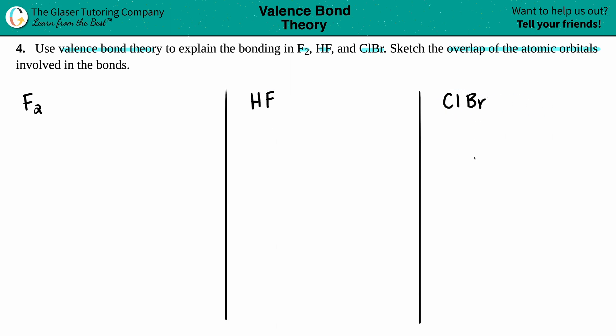To fully understand this question for valence bond theory, there are two things we need to know: how to draw Lewis structures and how to identify valence electrons, which comes from electron configuration. So the first thing I'm going to do is draw out the Lewis structures for each of them. Keep in mind that fluorine is going to be bound together.